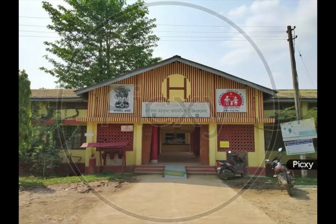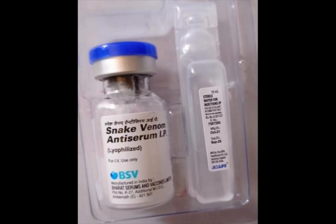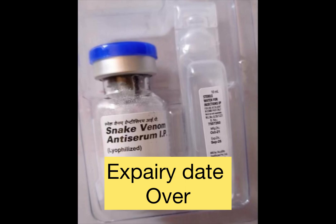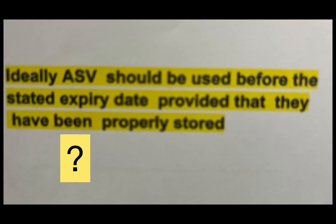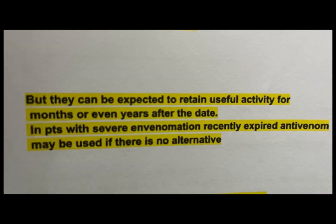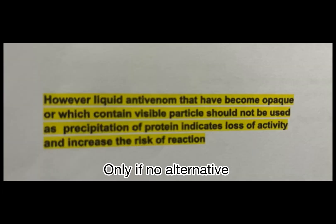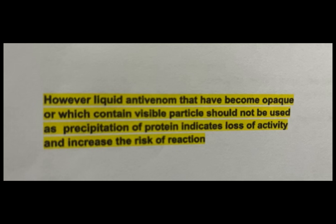Case 3: A man bitten by a viper was admitted with bleeding manifestations. The ASV available has expired one month ago, and the patient needs at least two hours to be transferred to a higher center. Ideally ASV should be used before the expiry date, but it can retain useful activity for months or years beyond that date. Recently expired antivenom may be used if there is no alternative; however, liquid antivenom that has become opaque or contains visible particles should not be used, as protein precipitation indicates loss of activity and increased risk of reaction.